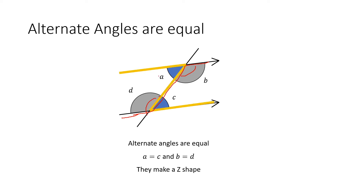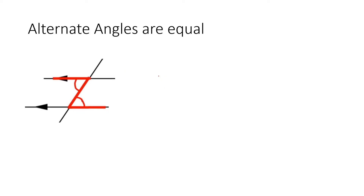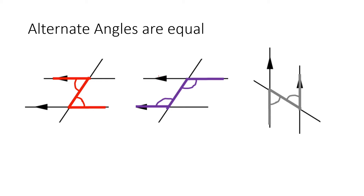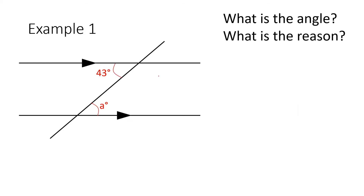Here are a couple more examples of how alternate angles look. This is the original one shown. The Z can also be flipped — it's still a Z, still an alternate angle, just flipped. And it can also be shown where your parallel lines are going up horizontally, but you can still see the Z figure that creates your alternate angles.